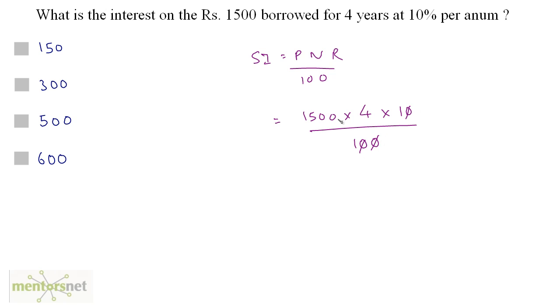So 10 upon 100. These two zeros and these two zeros get cancelled out. What we have is 150 times 4, and that's 600. So 600 is the interest. Option D is the correct answer.